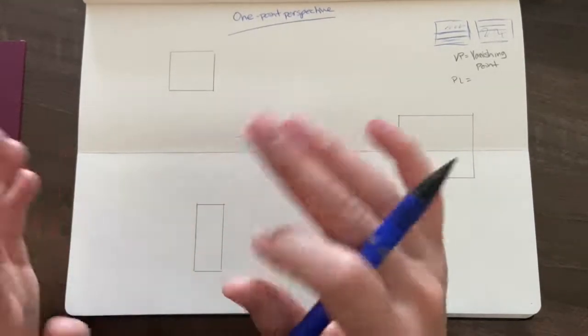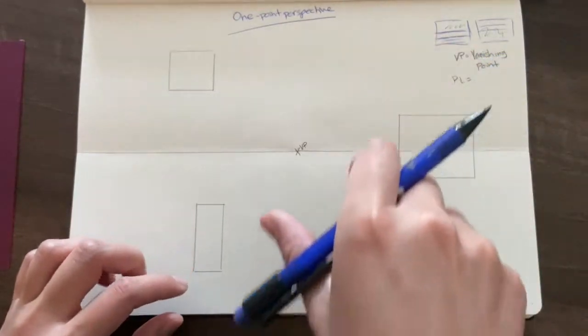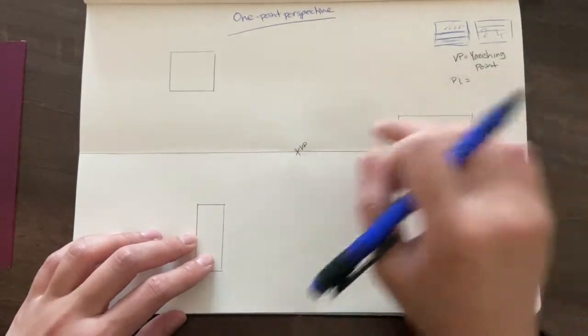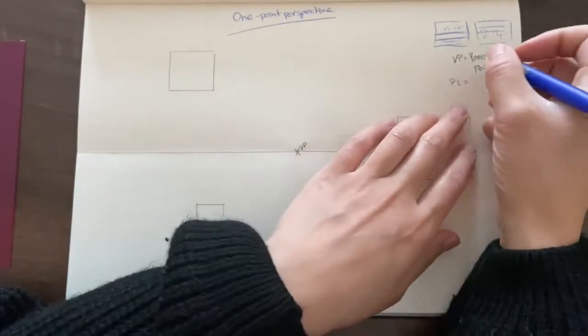So remember from the slides, when we were looking at a street-level image, the road itself became smaller and smaller into the distance. So projection lines will help you create that effect.